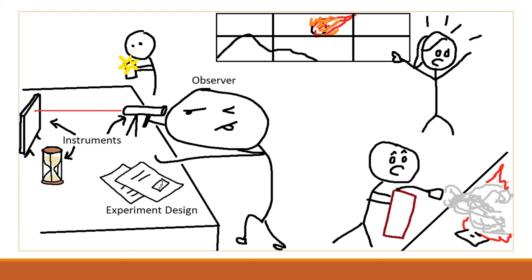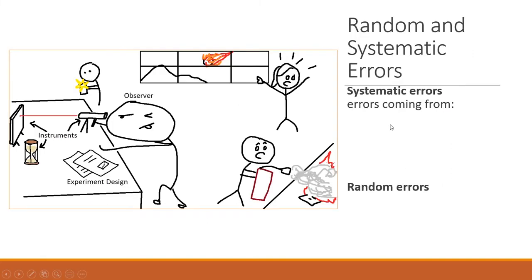Imagine in an experiment - this is not ideal by the way, I hope this does not happen when you do your experiments. Imagine we have a laboratory and this is what's happening. We have an observer doing an experiment with the experiment design and so many other things happening. What are random and systematic errors? What is the difference?